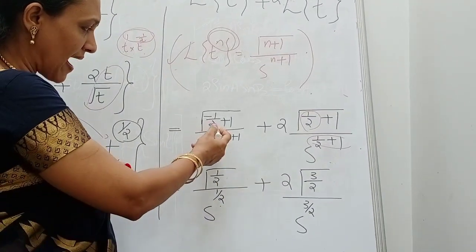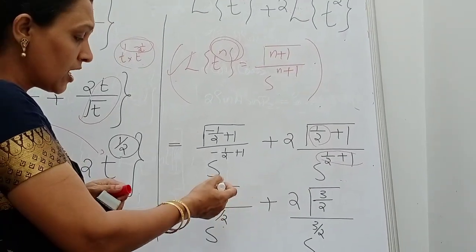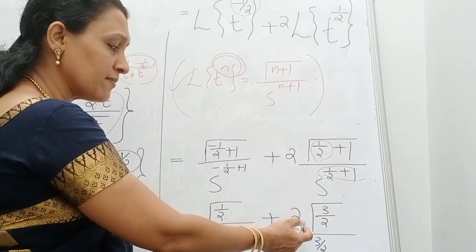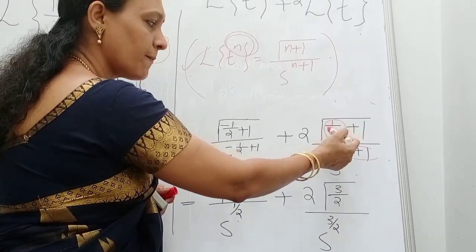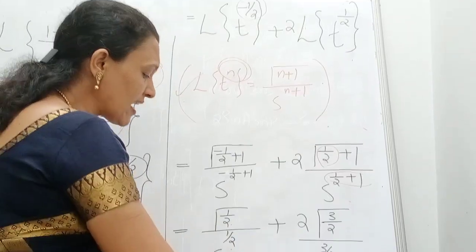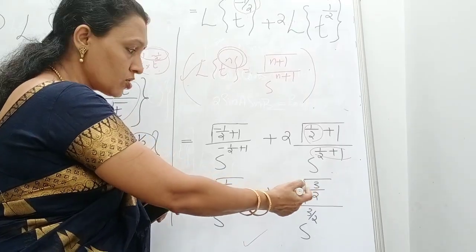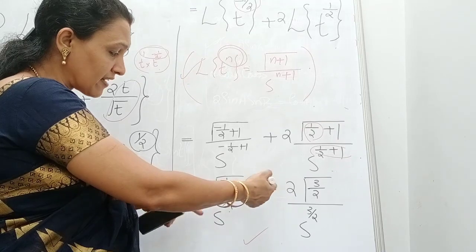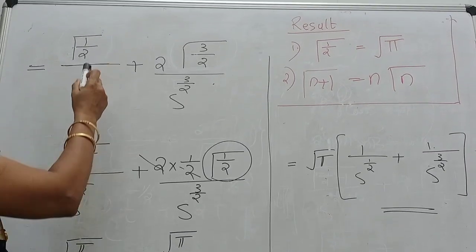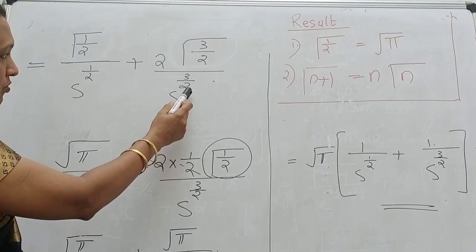Simplifying: minus 1 by 2 plus 1 gives gamma of 1 by 2 divided by S raised to half, plus 2 times gamma 3 by 2 — since 1 by 2 plus 1 equals 3 by 2 — divided by S raised to 3 by 2. We can further simplify these two terms involving gamma 1 by 2 and gamma 3 by 2.